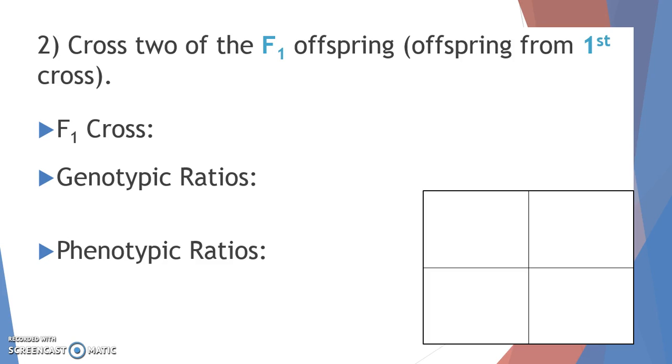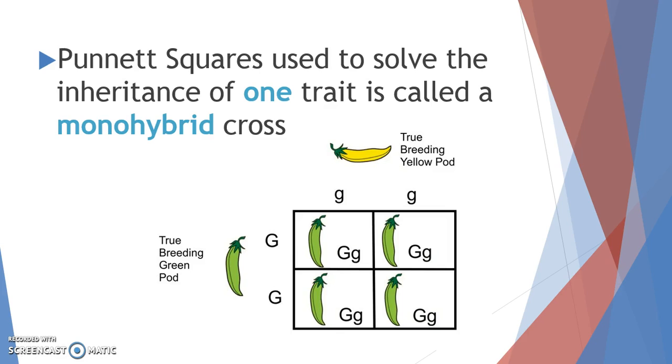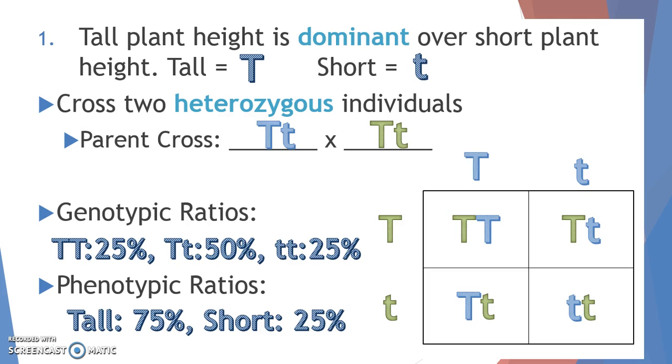So check yourself — you want to cross two of the F1 offspring. Sorry, I got ahead of myself.